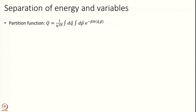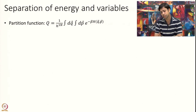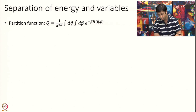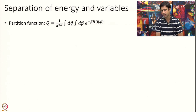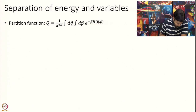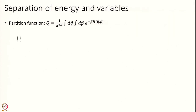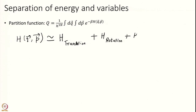This partition function by itself is very large and very complex to calculate — it is a 6N-dimensional integral with 3N q's and 3N p's. We simplify by noting one important property of the Hamiltonian: to a good approximation, the Hamiltonian can be separated into H_translation + H_rotation + H_vibration. Once we bring in quantum mechanics, we will also have an electronic part.